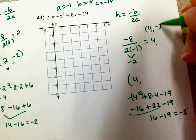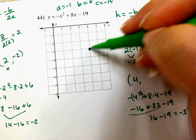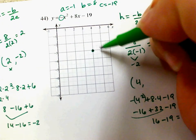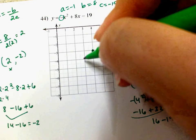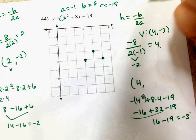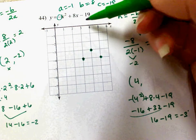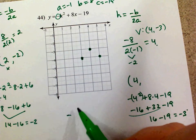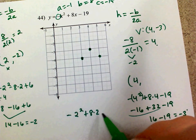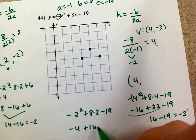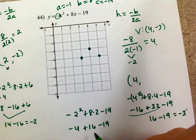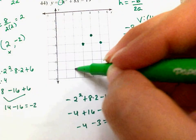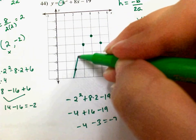I go to x equals 4 and down to negative 3 and put my dot. Because the leading coefficient is negative 1, I go right 1 and down 1, and left 1 and down 1 by symmetry. For one more point, I'll plug in x equals 2 — it's easier than 6. Negative (2 squared) plus 8 times 2 minus 19: negative 4 plus 16 minus 19. 16 minus 19 is negative 3, and negative 4 plus negative 3 is negative 7. So at x equals 2, y equals negative 7, and at x equals 6, y equals negative 7. Connect and there's the parabola.